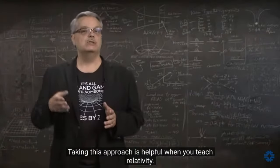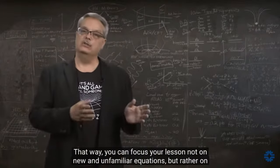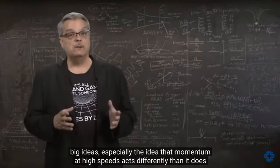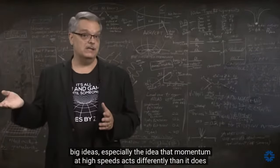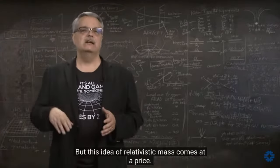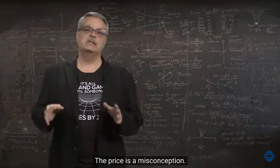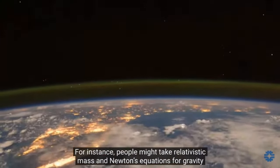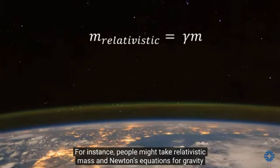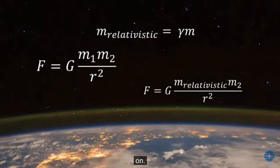Taking this approach is helpful when you teach relativity — you can focus your lesson on big ideas, especially the idea that momentum at high speeds acts differently than at low speeds. But this idea of relativistic mass comes at a price: misconception. For instance, people might take relativistic mass and Newton's equations for gravity and come up with some silly hodgepodge equations that don't accurately reflect what is going on.